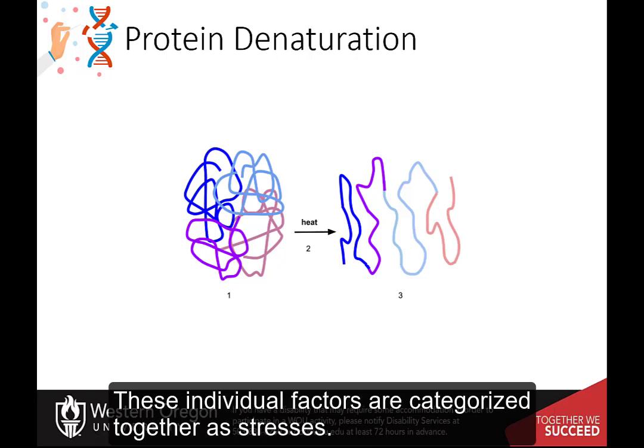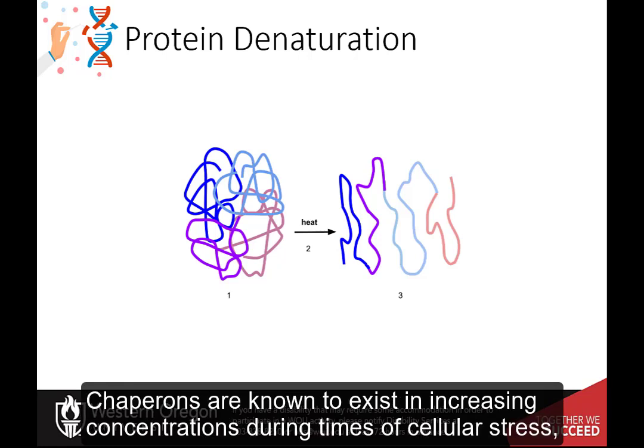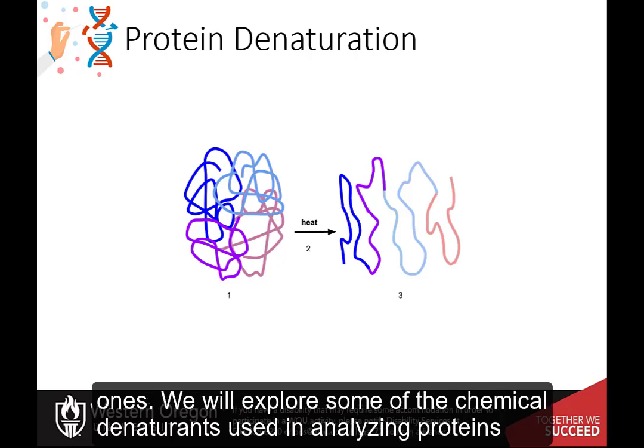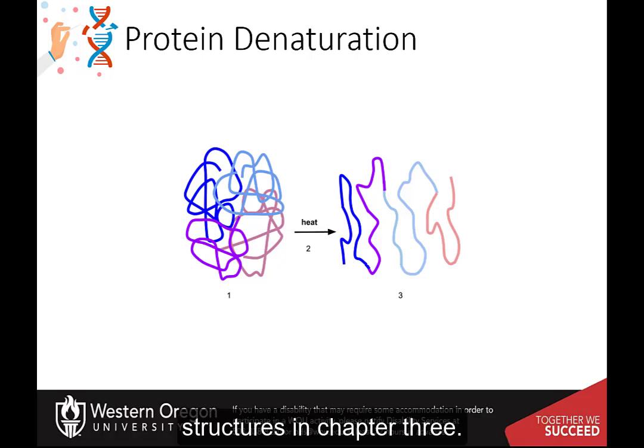These individual factors are categorized together as stresses. Chaperones are known to exist in increasing concentrations during times of cellular stress and help the proper folding of emerging proteins, as well as denatured or misfolded ones. We will explore some of the chemical denaturants used in analyzing protein structures in Chapter 3.